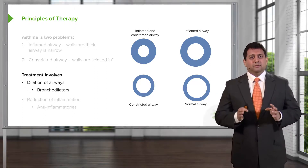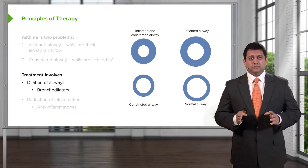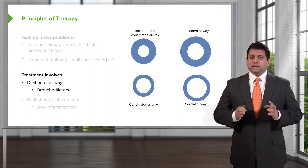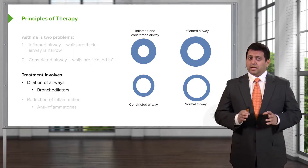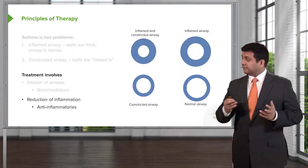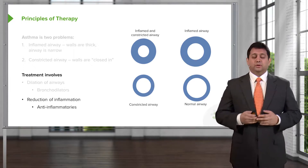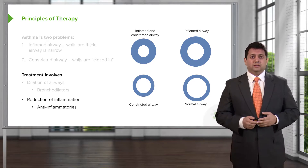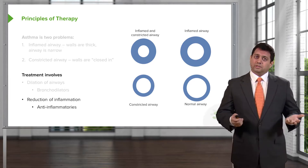Now, treatment involves two types of therapy. You can bronchodilate, or you can give anti-inflammatories to reduce thickness. Or you can do both.